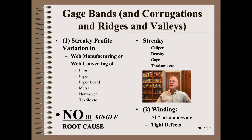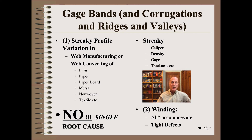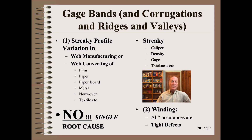Gauge bands, corrugations, ridges, and valleys are all in a similar class. They are caused, in part, by a streaky web profile variation coming from either web manufacturing or from web converting operations, most particularly coating. Streaky profiles are quite common because most web processes vary in the cross-direction much more than they vary with time. Streaky patterns can be stable for hours, days, or even forever, because some processes have edge effects that are unavoidable.